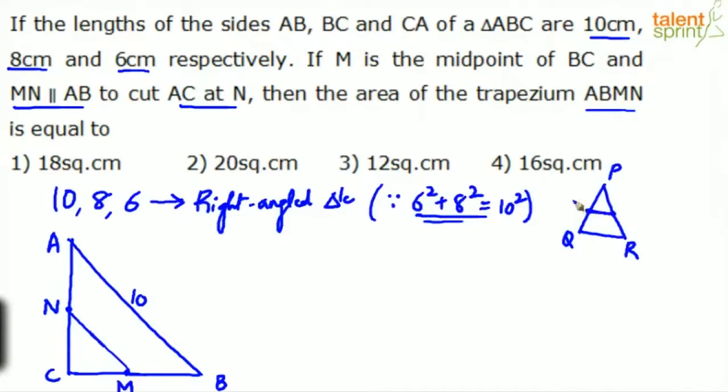Then XY will be parallel to QR. XY will be parallel to QR. And XY will be half of QR. This is midpoint theorem in terms of an example. The line joining the midpoints of two sides will be parallel to the third side and it will be half of the third side.